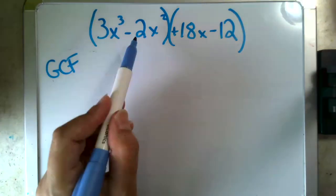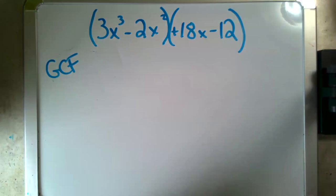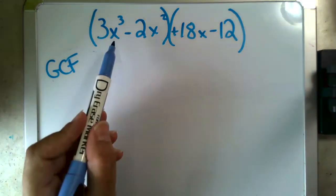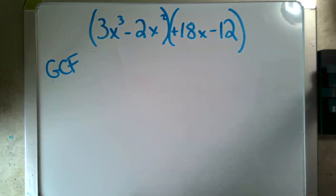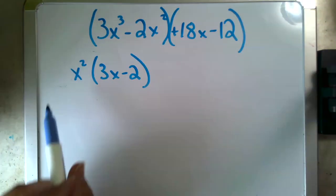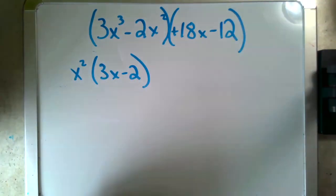So when I look at my first, 3 and 2, they share no common factor. x cubed and x squared, my lowest degree of x, x squared, could come out of both. And so that will look like this, where I've divided each of these terms by my x squared.